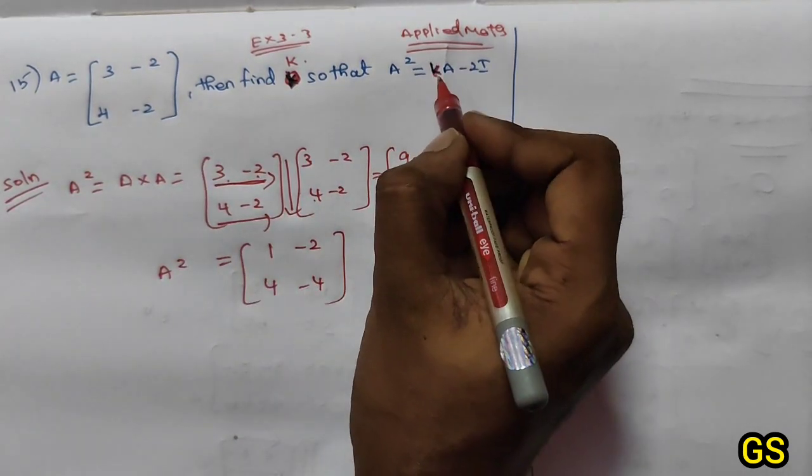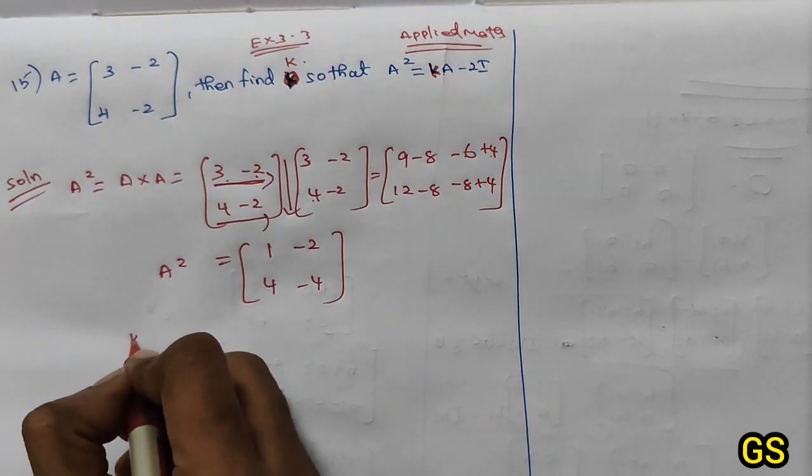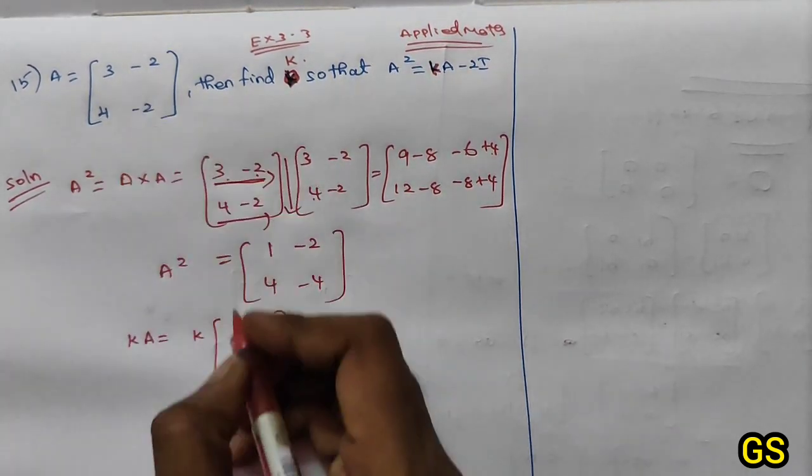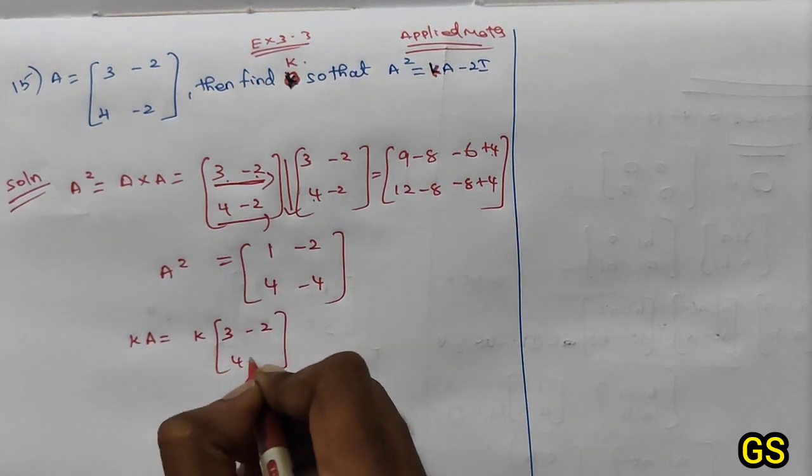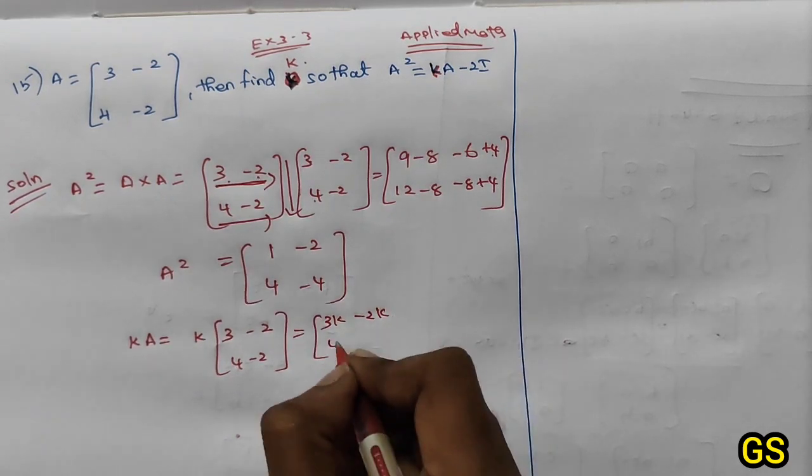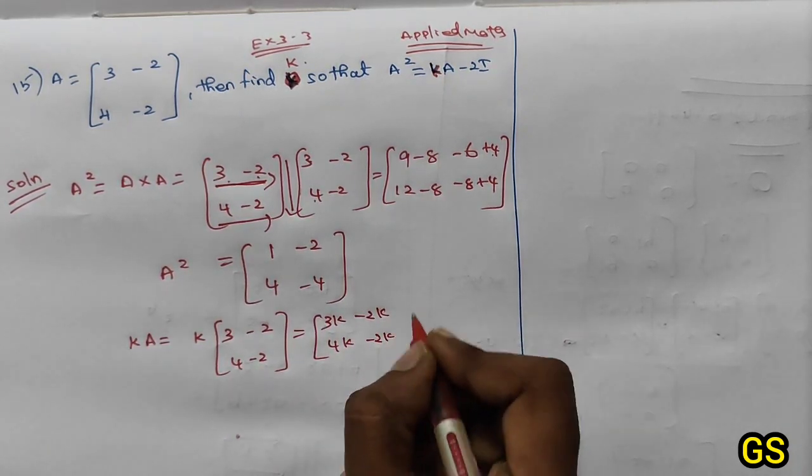Now equal to k, where k is a constant number times A matrix: k into [3, -2; 4, -2]. So that means [3k, -2k; 4k, -2k].